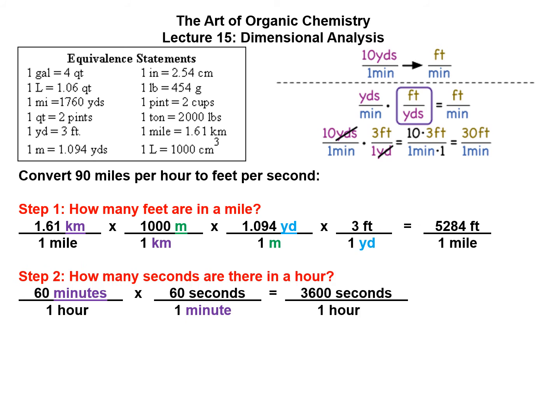The second step is how many seconds are there in an hour. This is a little bit easier because we know there's 60 minutes per hour and 60 seconds per minute. So we set this up so the minutes cancel out, and we go 60 times 60 equals 3,600 seconds per hour. Now we're ready to set up our problem.